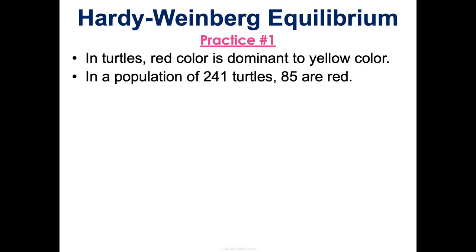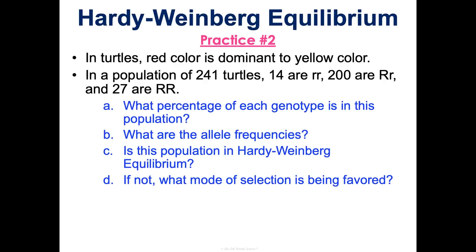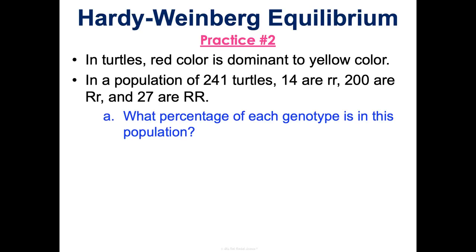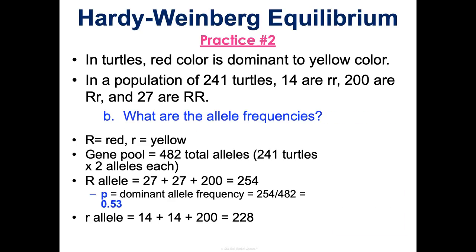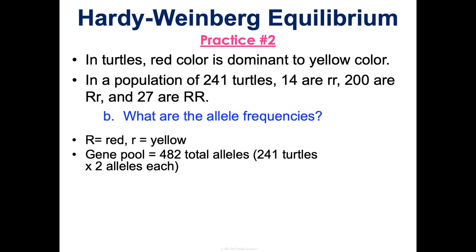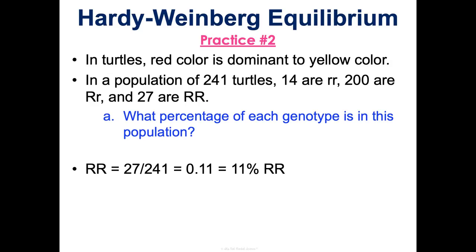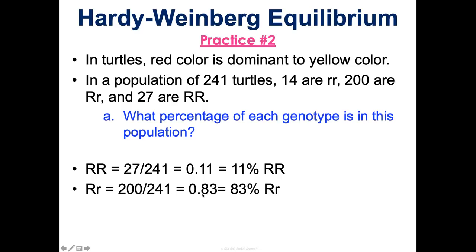Here's some practice — I'm not going to show you the answers, but I want you to work through this practice problem. This next one is a little bit harder, so I'll actually talk through it. We're given actual genotype counts for a turtle population of 241: 27 are big R big R, 200 are heterozygous, and 14 are little r little r. To find genotype frequencies: 27 divided by 241 gives 0.11, so 11% are big R big R; 200 divided by 241 gives 0.83, so 83% are heterozygous; 14 divided by 241 gives 0.06, so 6% are little r little r.